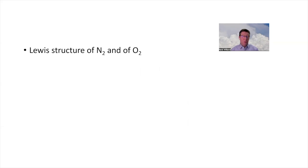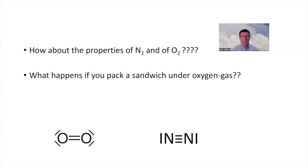You probably know one part of the periodic table, BCNOF, so we know that carbon has four valence electrons, so we need to draw five electron pairs around N2 and six electron pairs around O2. We all know that a sandwich can be packed under nitrogen to keep it fresh. Now think about what will happen if you pack a sandwich under oxygen. Your sandwich will become inedible very, very quickly. It will become rancid.